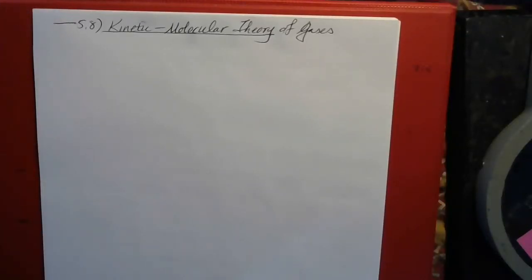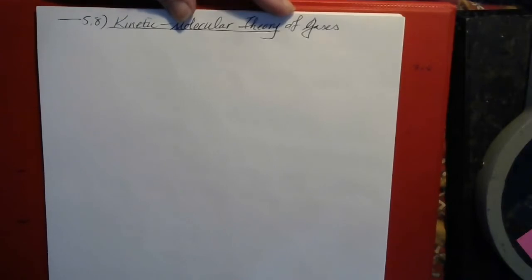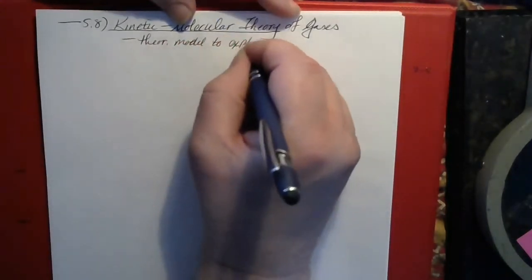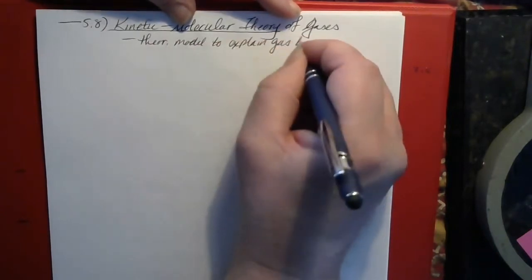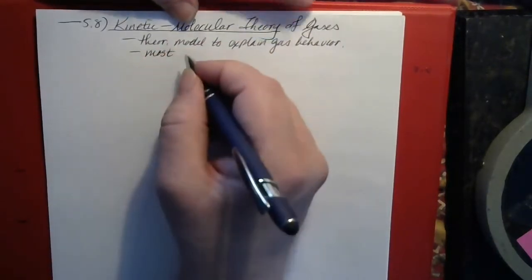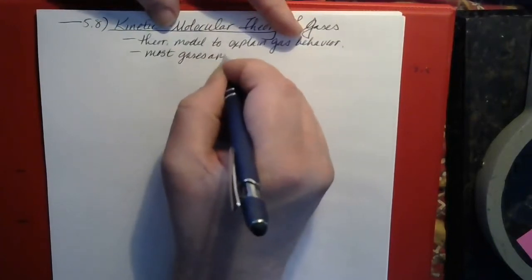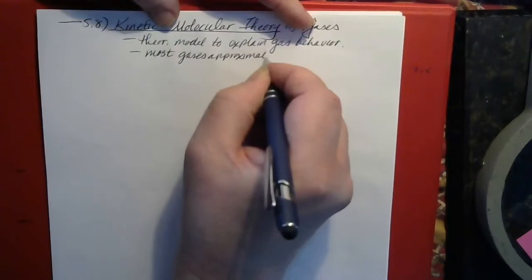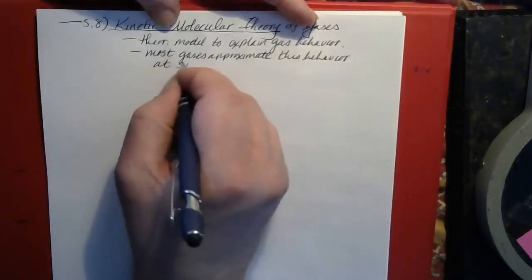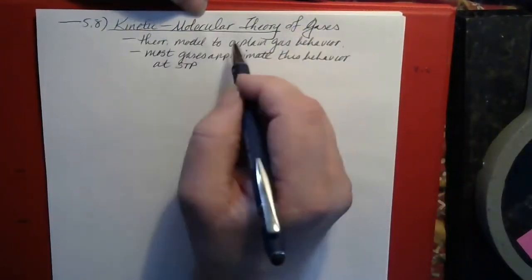The third segment is where we get into the kinetic molecular theory of gases. This is a theoretical model of gas behavior. Most gases either obey or come very close to obeying the kinetic molecular theory under most circumstances. At standard temperature and pressure, most gases will come very close to fulfilling the kinetic molecular theory completely.